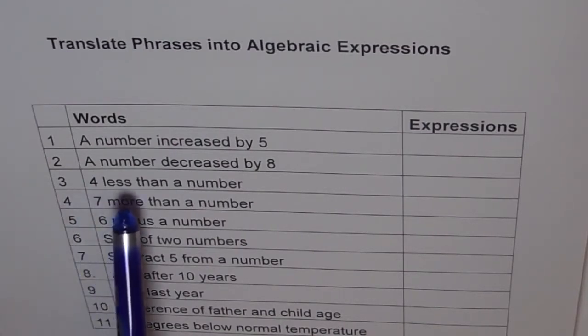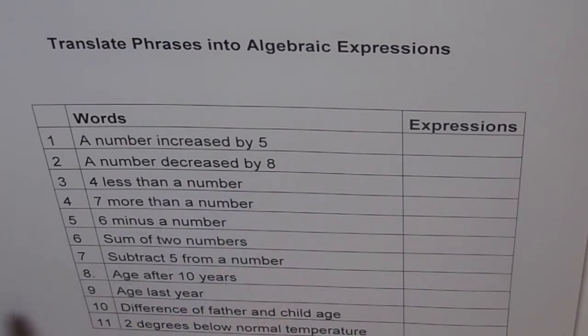The second one is a number decreased by 8. Then 4 less than a number. Then 7 more than a number. Fifth is 6 minus a number. Sixth, sum of two numbers. So here we have two numbers. So you have to define two numbers. Let the two numbers be x and y, and then sum will be their addition.